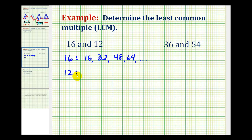Now let's go ahead and list multiples of 12. So we'll start with 12, then add another 12 — that would be 24, add another 12 — that would be 36, add another 12 — that would be 48, and so on.